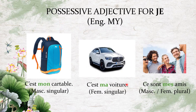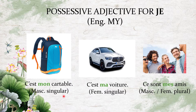The first possessive adjective is for 'je' — since 'je' means 'I,' we're talking about the English word 'my.' In French, 'my' has three forms: mon, ma, and mes. 'Mon' is used with a masculine singular noun. 'Ma' is used with a feminine singular noun. 'Mes' is used with a plural noun — and when the noun is plural, the gender doesn't matter; it is always mes for both masculine and feminine plural.